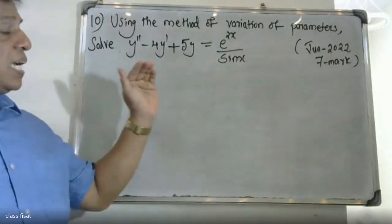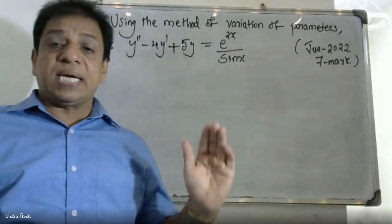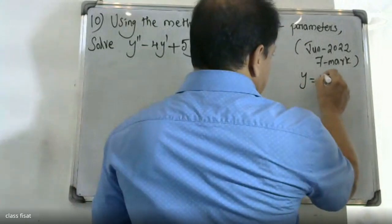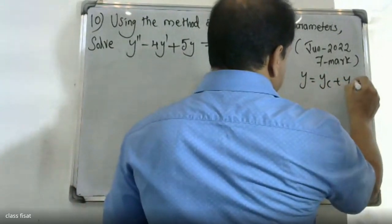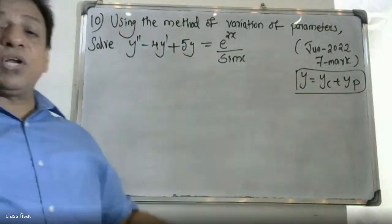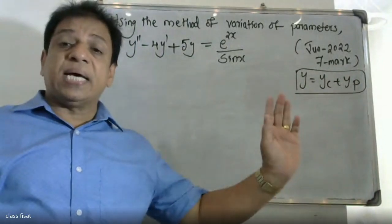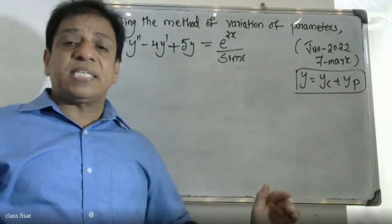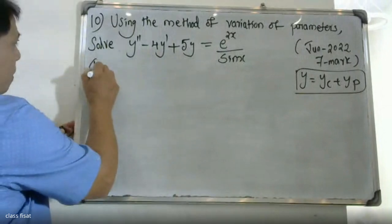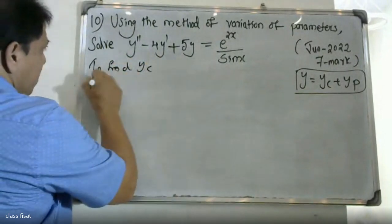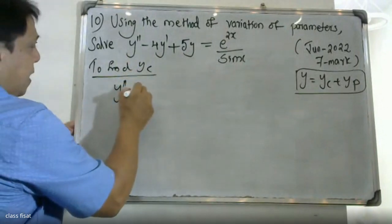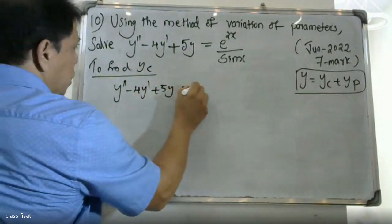Here the right-hand side is not equal to zero for the particular solution, but for the complementary function yc, the right-hand side is set to zero. To find yc, we solve y'' - 4y' + 5y = 0.